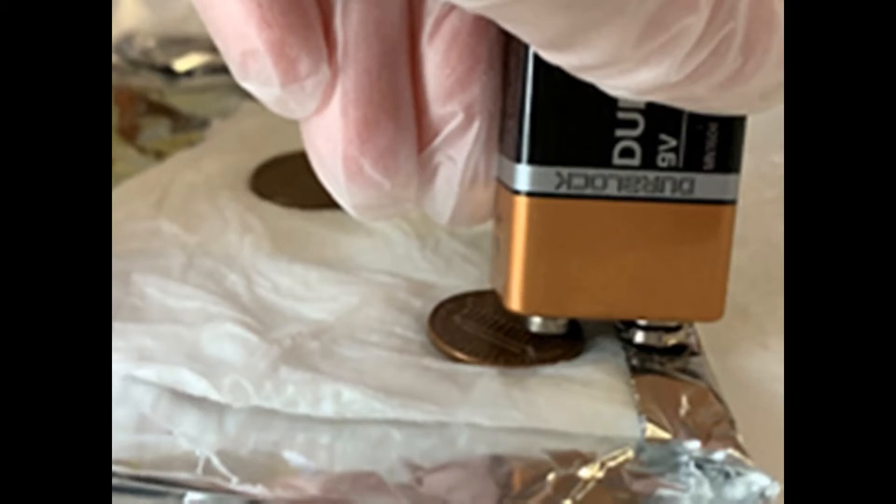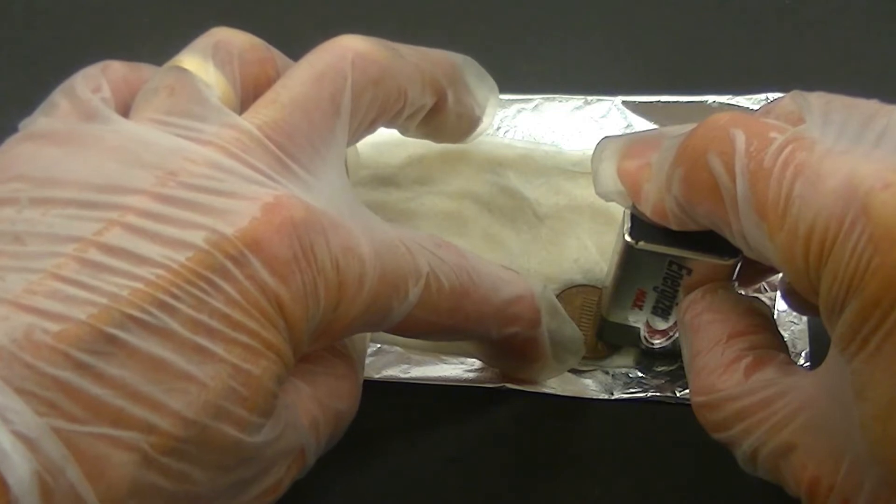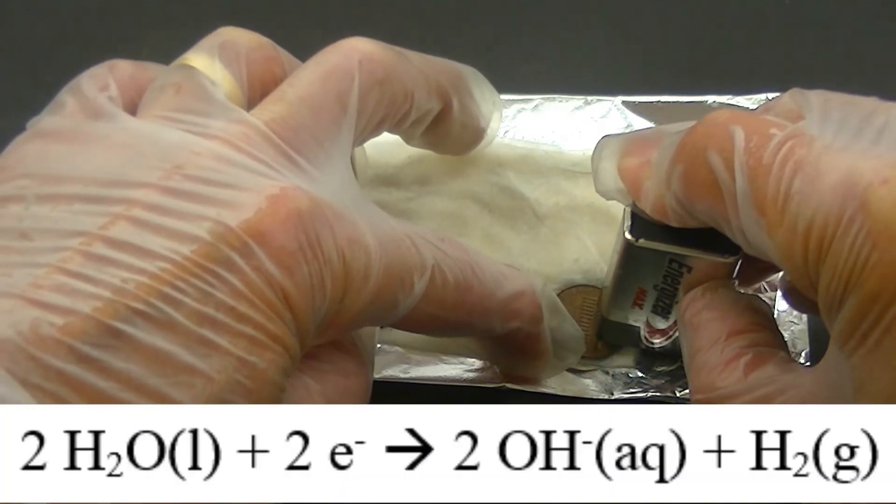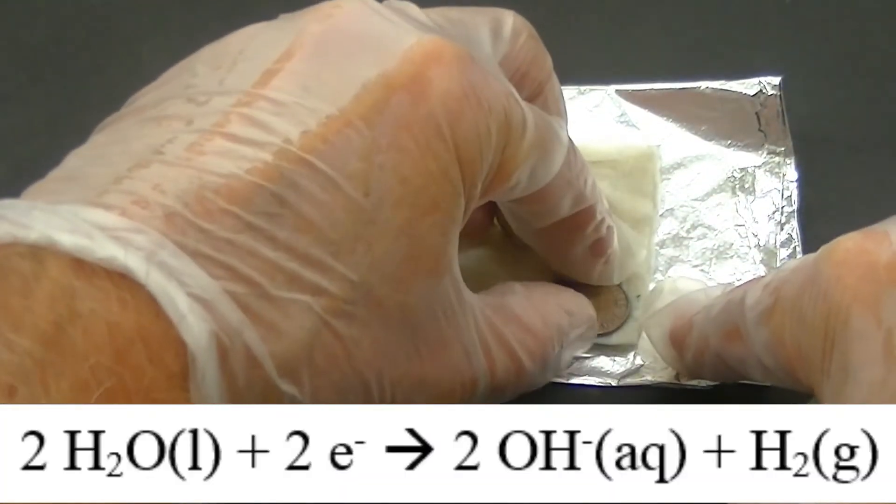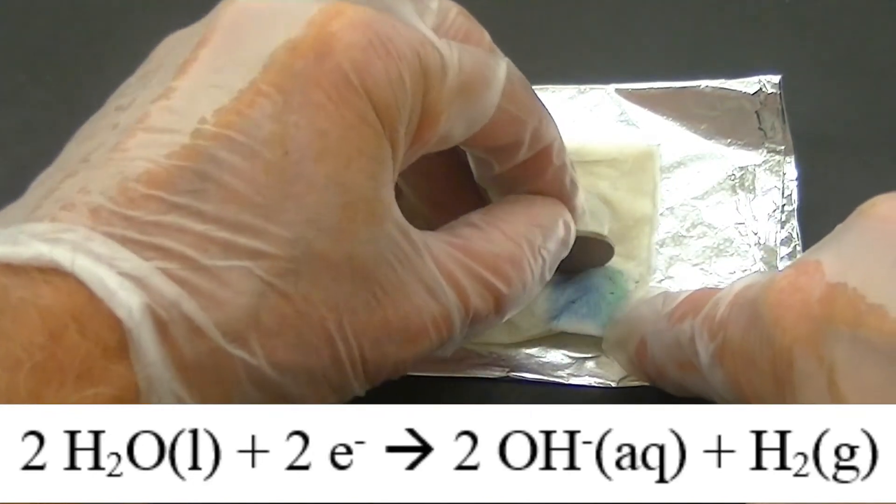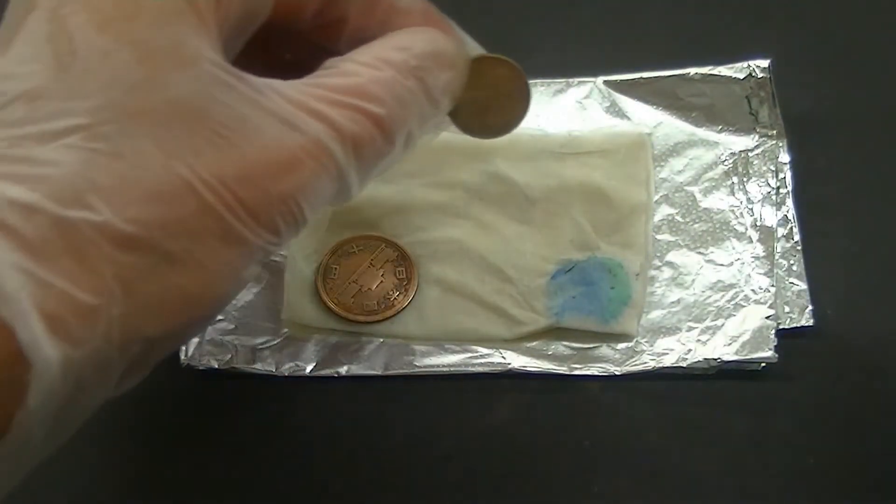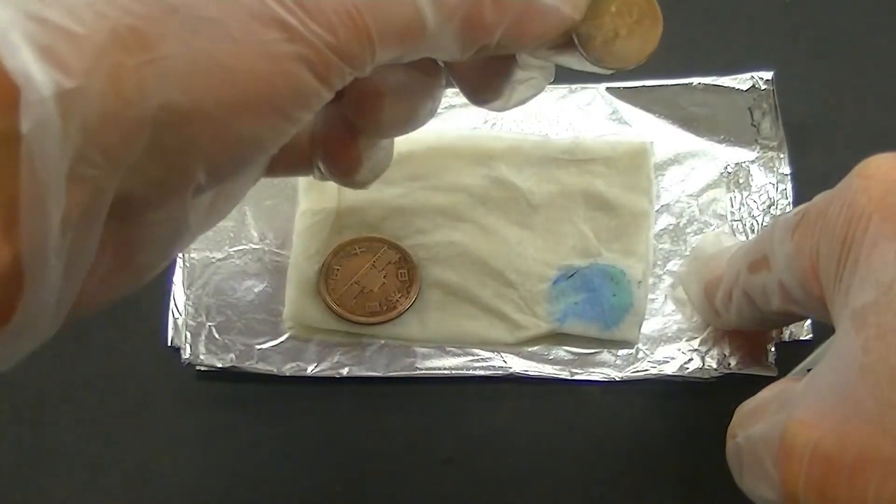While doing this, I press down hard on the coin. If everything is working, you should be able to hear a faint hiss, which is due to the production of hydrogen gas at the interface between the foil and the back of the paper towel. Hey look! When I remove the coin, a blue spot has formed on the paper towel.